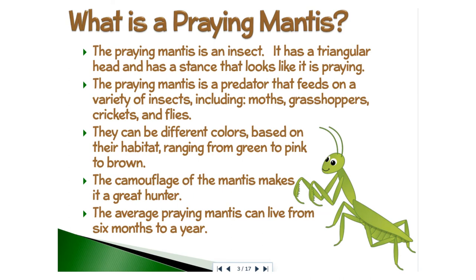What is a praying mantis you might say? The praying mantis is an insect. It has a triangular head that has a stance that looks like it is praying. The praying mantis is a predator that feeds on a variety of insects including moths, grasshoppers, crickets, and flies.